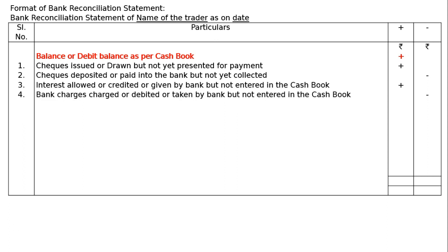The fourth item is bank charges debited by the bank but not entered in the cash book. Bank charges are debited to your account directly by the bank; they do not come to collect this money. The cash book is unaffected, but the pass book balance is already reduced, so we deduct it from the cash book balance to find the balance as per pass book.